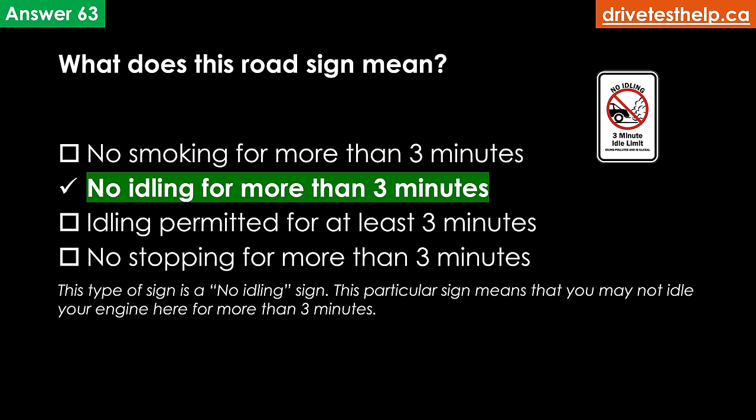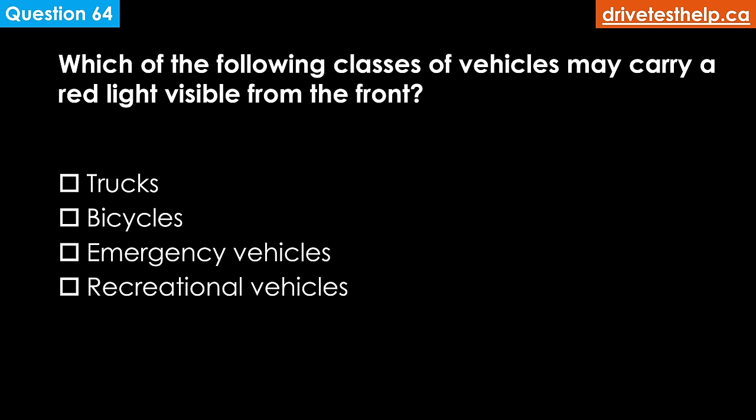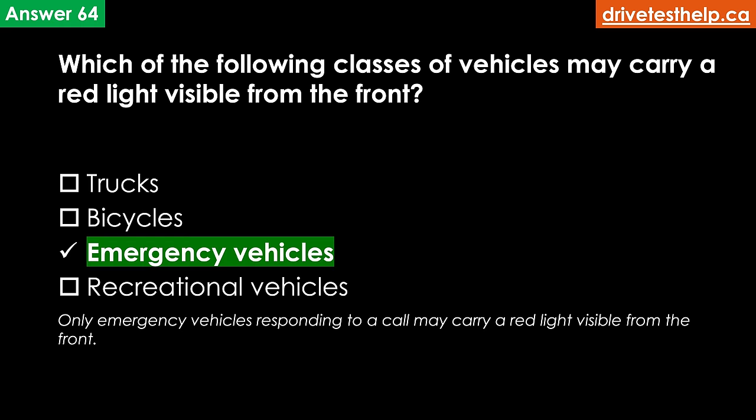Which of the following classes of vehicles may carry a red light visible from the front? Options: trucks; bicycles; emergency vehicles; recreational vehicles. The correct answer is emergency vehicles. Only emergency vehicles responding to a call may carry a red light visible from the front.